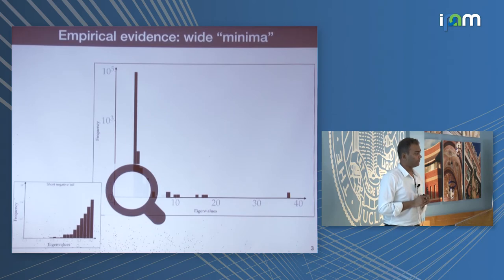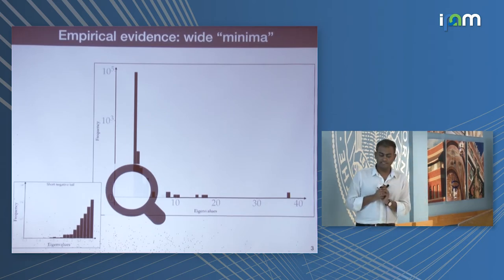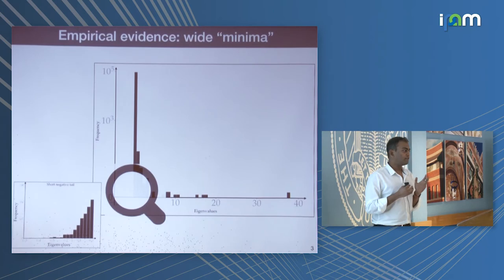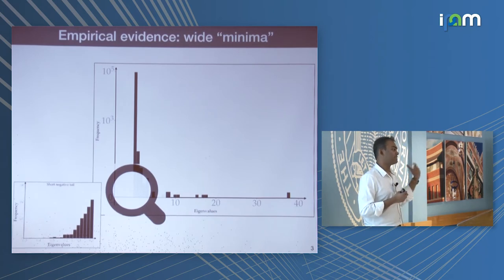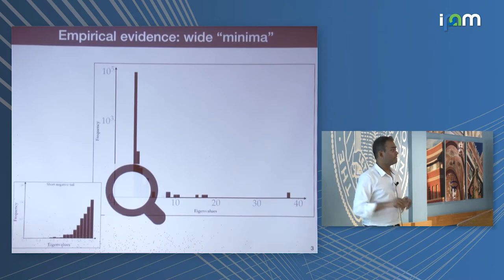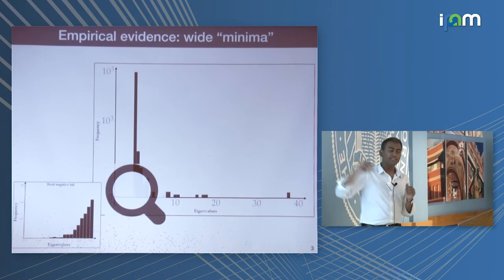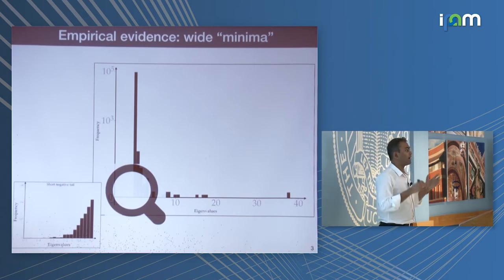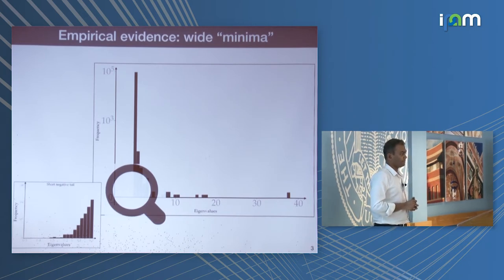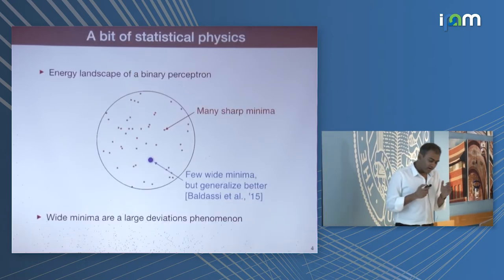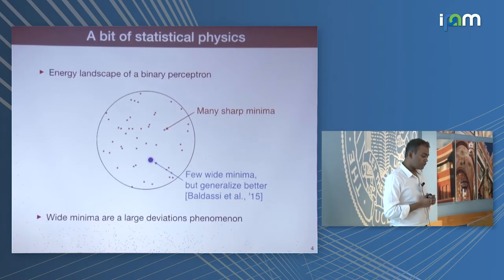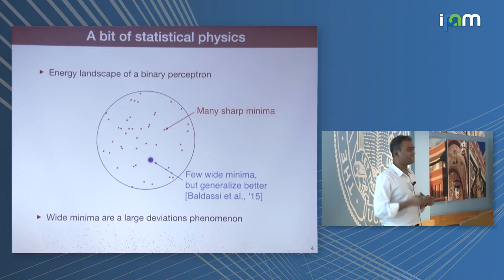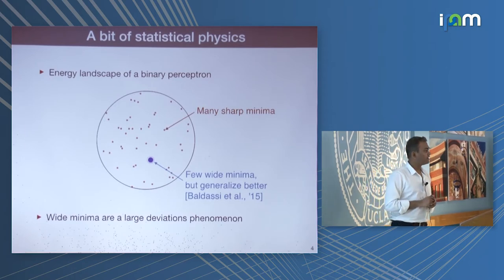The key point about this picture is that it is quite universal. Irrespective of what dataset you plug into your network, irrespective of what architecture you use — RNNs on text data or CNNs on image data — the Hessian after optimization looks like this. Stochastic gradient descent, when it works well, converges to regions that are wide in the energy landscape.